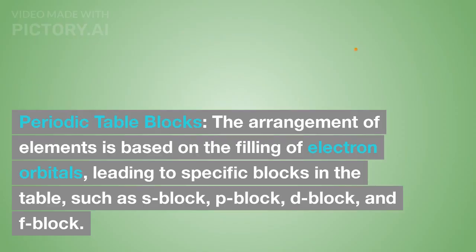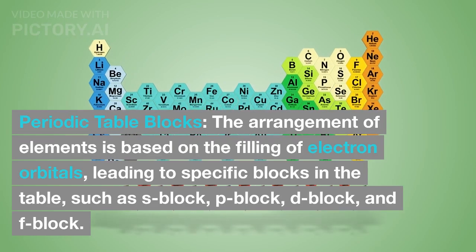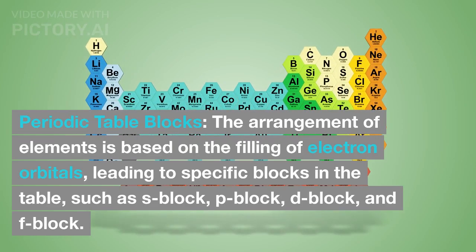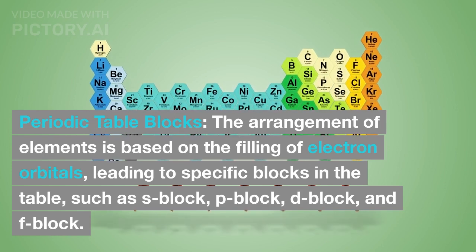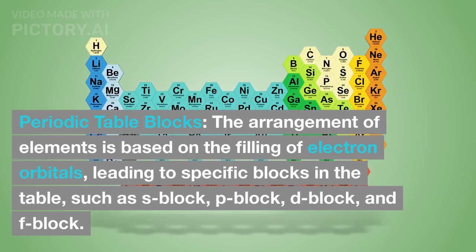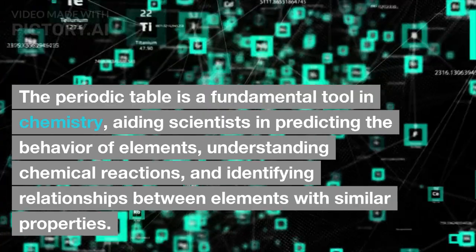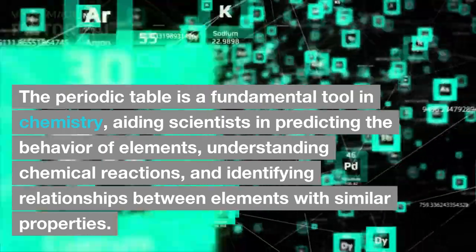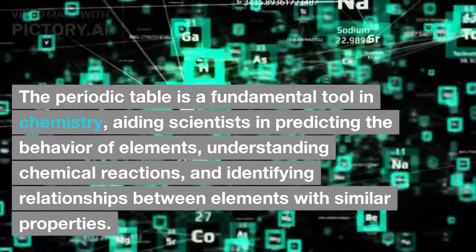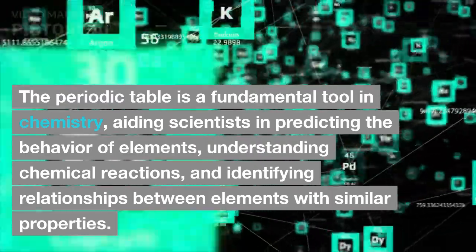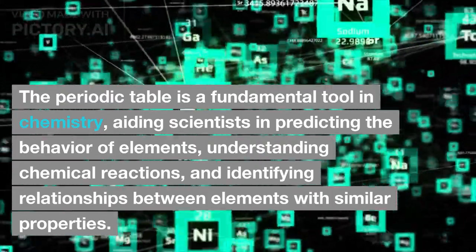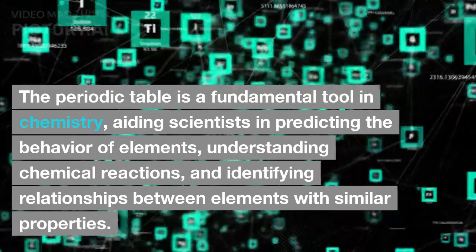The periodic table is a fundamental tool in chemistry, aiding scientists in predicting the behavior of elements, understanding chemical reactions, and identifying relationships between elements with similar properties.